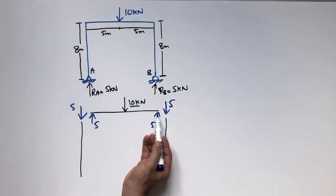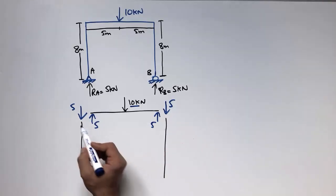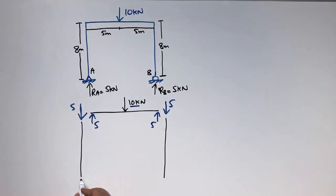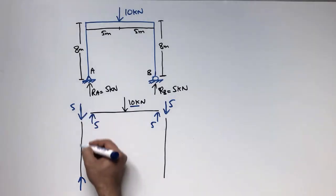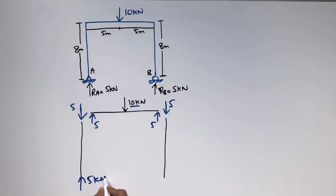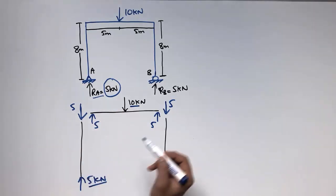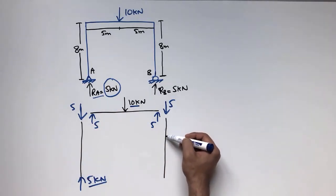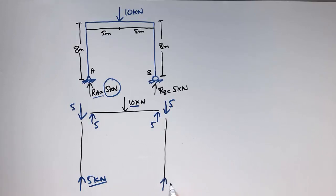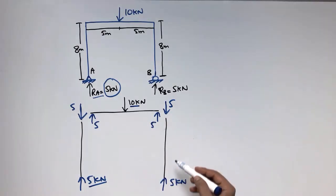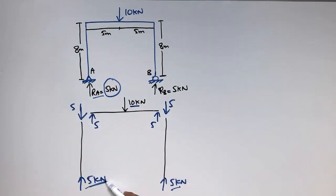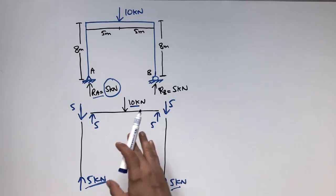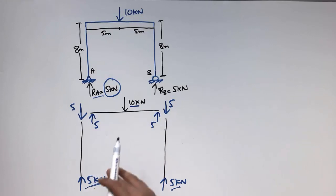Similarly, the joint on the other side is in equilibrium: 5kN acts upward and 5kN acts downward. The upward force acts on the column and is resisted by the support reaction RA of 5kN. The downward force on the other column is also supported by a reaction of 5kN. This is how loads transfer from the beam through the joints to the supports.